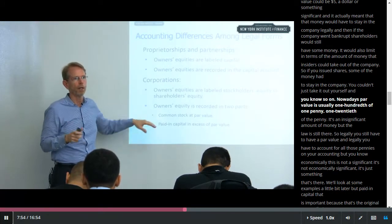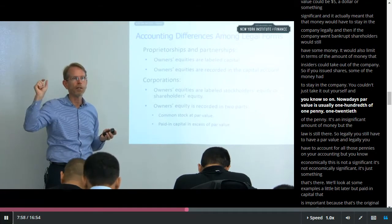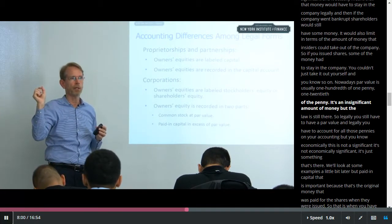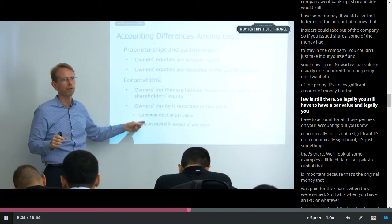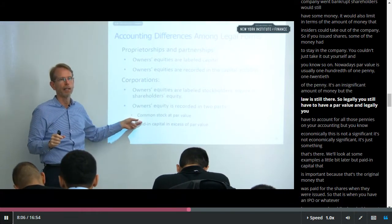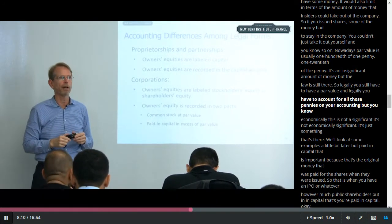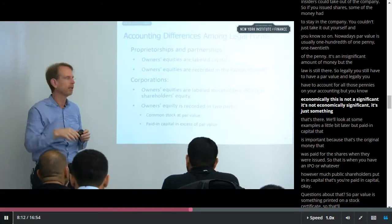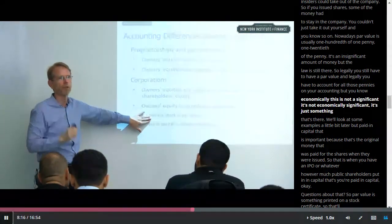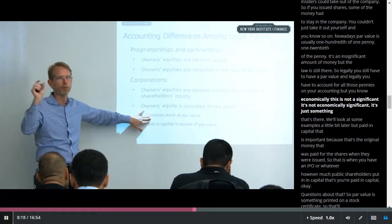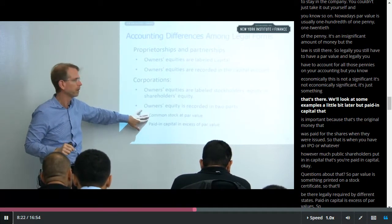Nowadays, par value is usually one-hundredth of one penny, one-twentieth of a penny — an insignificant amount of money. But the law is still there, so legally you still have to have a par value and legally you have to account for all those pennies in your accounting. Economically, this is not significant — it's just something that's there. We'll look at some examples a little bit later.